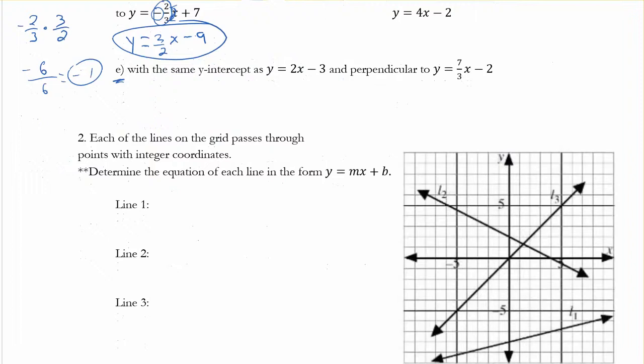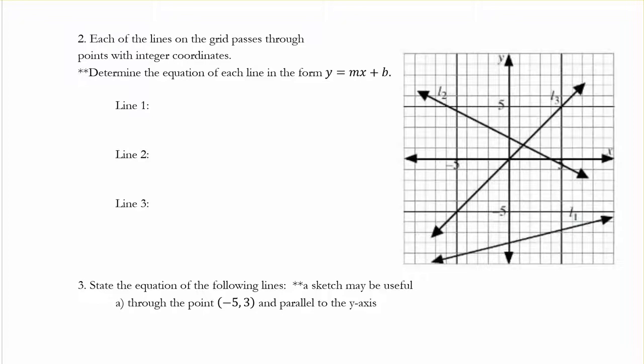So, I'll also let you guys just do these questions. And just know that it says each of the lines on the grid passes through points with integer coordinates. So again, all you're looking for there is places where the line lines up right on the grid. So integer coordinates, so that's what you're going to use.